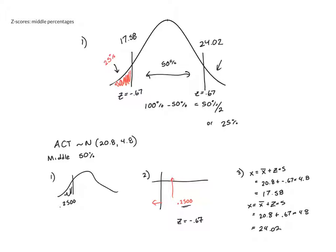So what was closest to 0.2500, I traced that up and over and got a z-score of -0.67. Once I found that, I went over to step three and plugged it in for z.